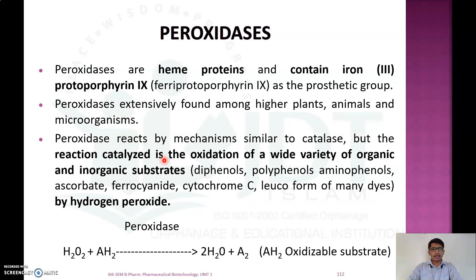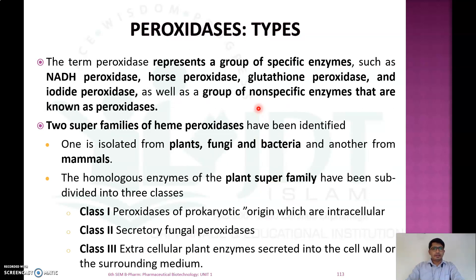Peroxidase acts by a mechanism similar to catalase. It will catalyze the degradation of hydrogen peroxide, but the difference is that the peroxidase enzyme will catalyze the oxidation of a wide variety of organic and inorganic substances like diphenols, polyphenols, amino phenols, ascorbate, ferrocyanate, cytochrome C, etc. While degrading the peroxide to water, the oxidizable substances will also be oxidized.